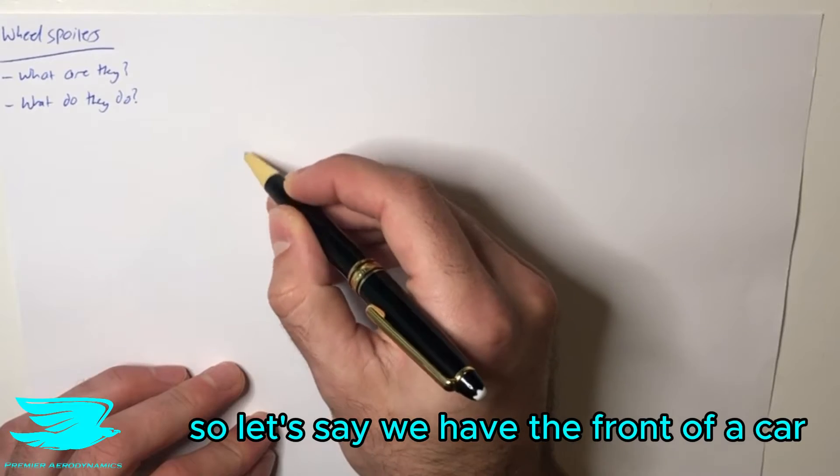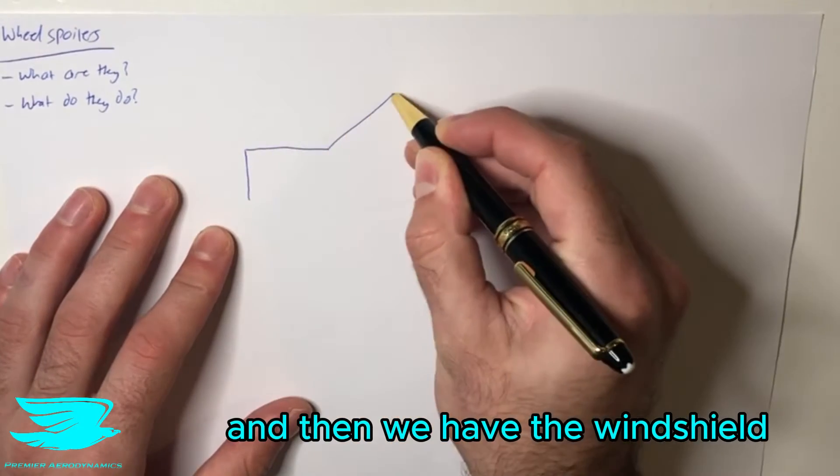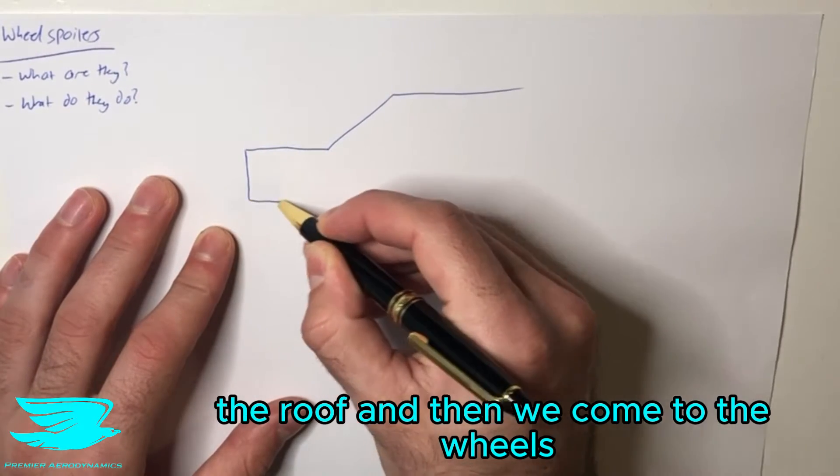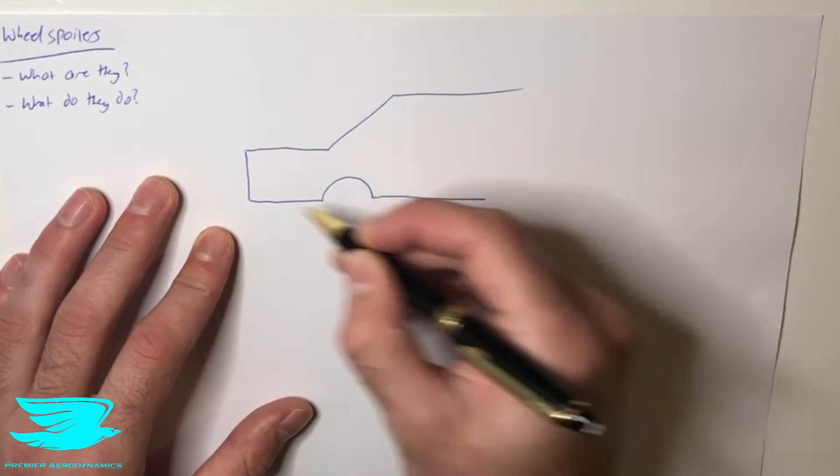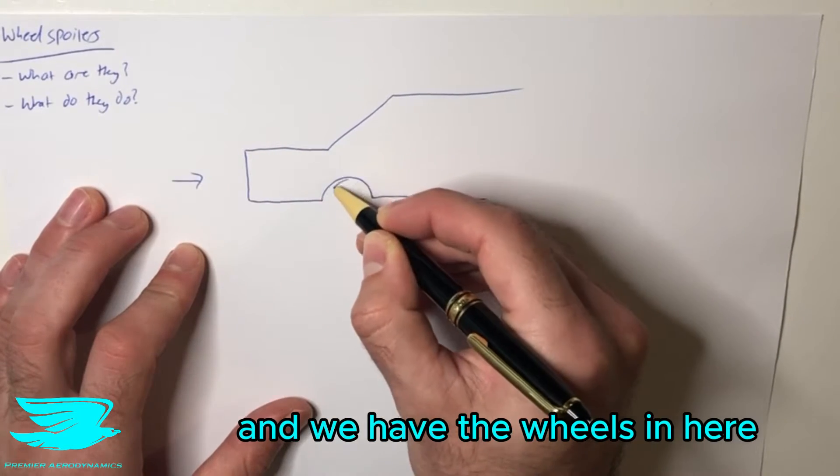So let's say we have the front of a car, the windshield, the roof, and then we come to the wheels. The flow is coming this way, and we have the wheels here.